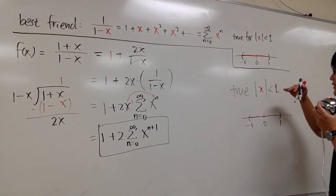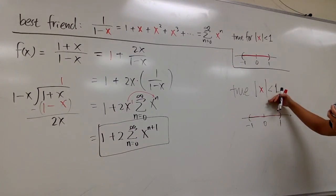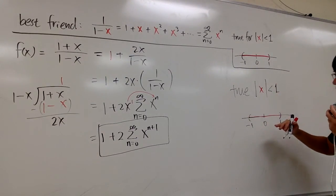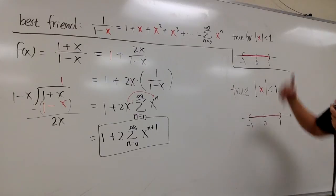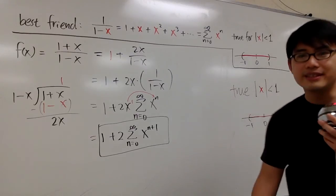We also have the same radius of convergence and interval of convergence as our best friend. This is it.